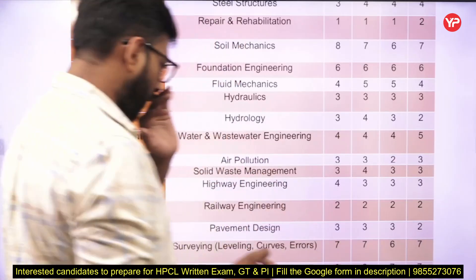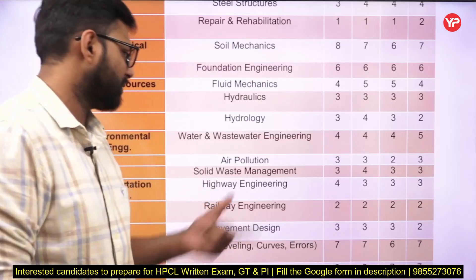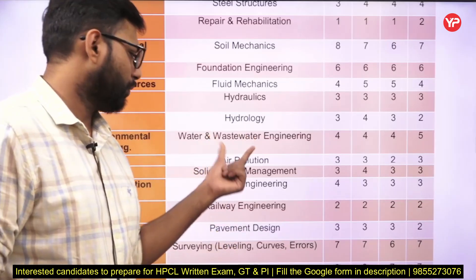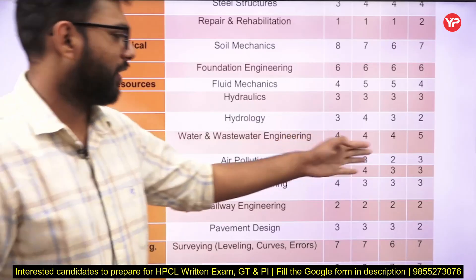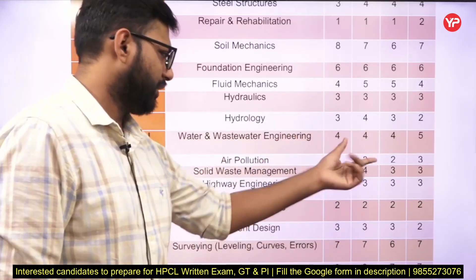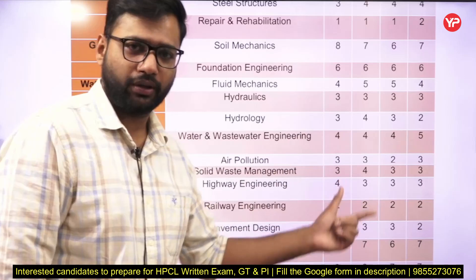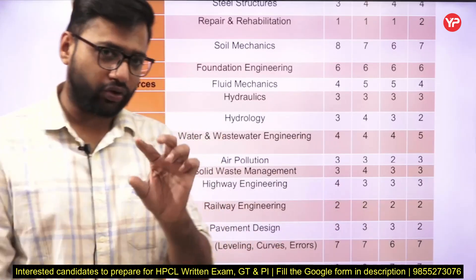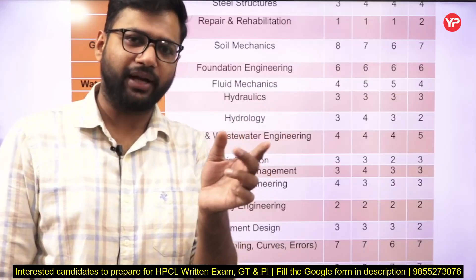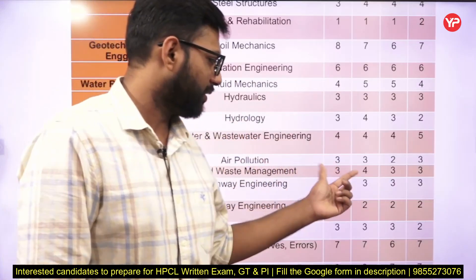Environmental engineering has three parts: water, air, and solid waste. The water part has four to five questions, the air part has two to three questions, and solid waste has three to four questions. Solid waste is very important for your exam, with three to four questions consistently appearing.